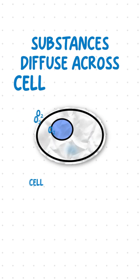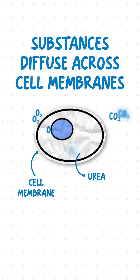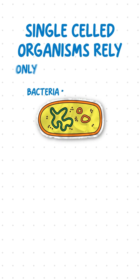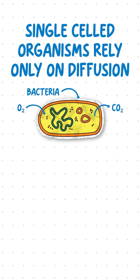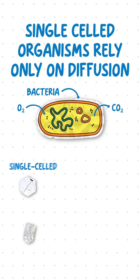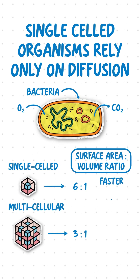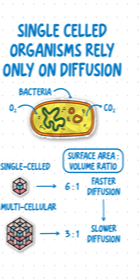Substances diffuse into and out of cells across cell membranes, which requires no energy. Single-celled organisms like bacteria rely only on diffusion for transport of substances into and out of the cell, because they have a larger surface area to volume ratio compared to multicellular organisms, which allows for faster diffusion.